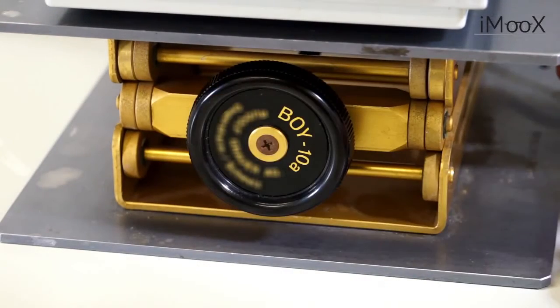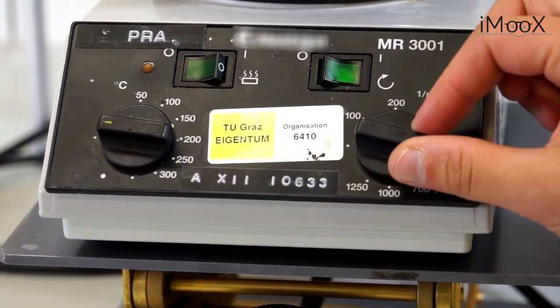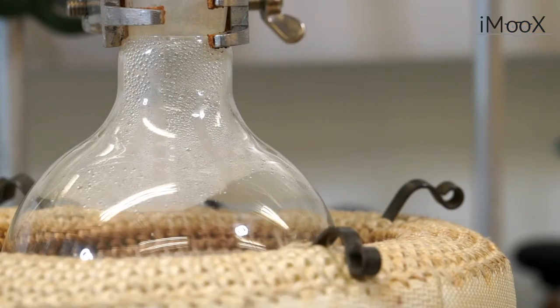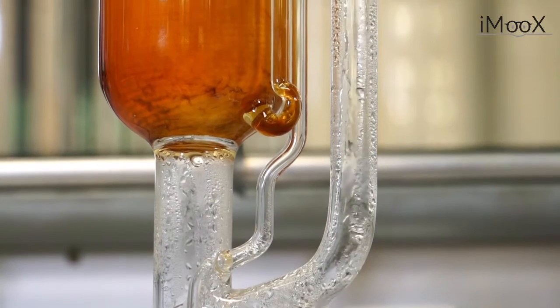She uses a jack stand, which allows the immediate interruption of the extracting process in case something goes wrong. Larissa has already started the heating mantle. The water vaporizes up to the Soxhlet and the condenser.